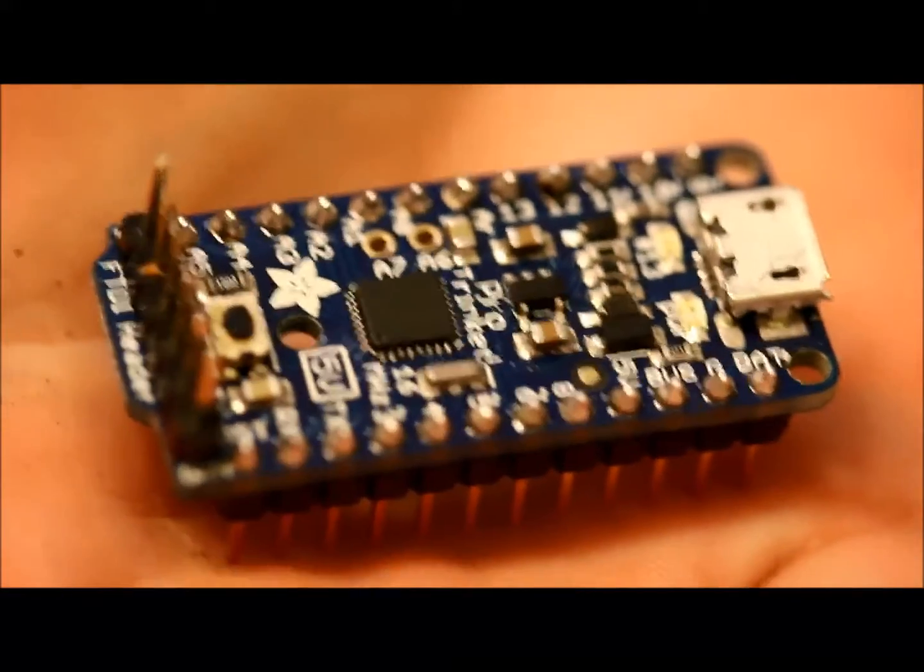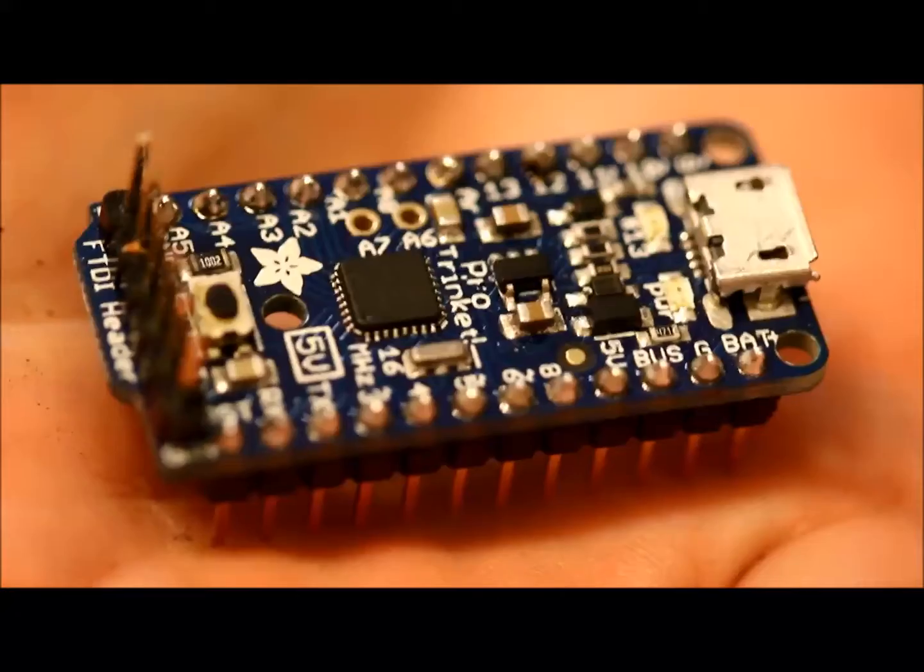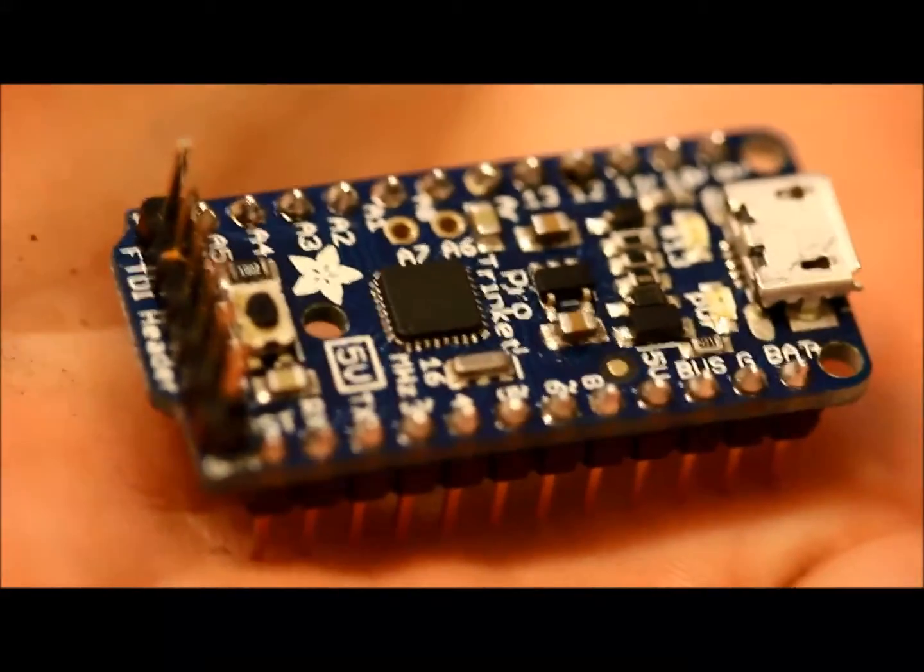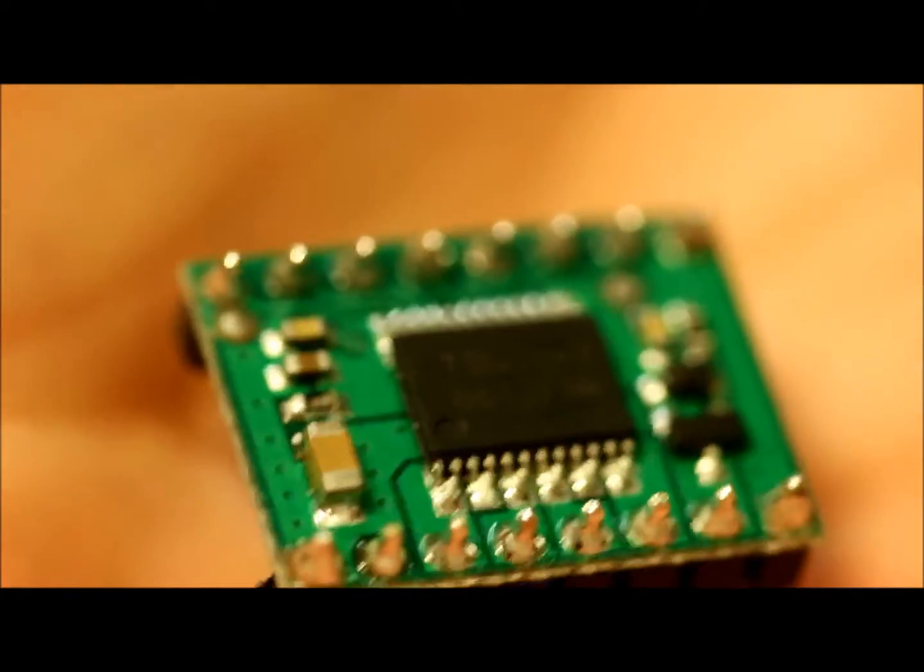To begin constructing Motherboard 4.0, you will first need its brain, which in this case will be the Pro Trinket 5 volts. To act as motor control, we will use the TB66 H-bridge.